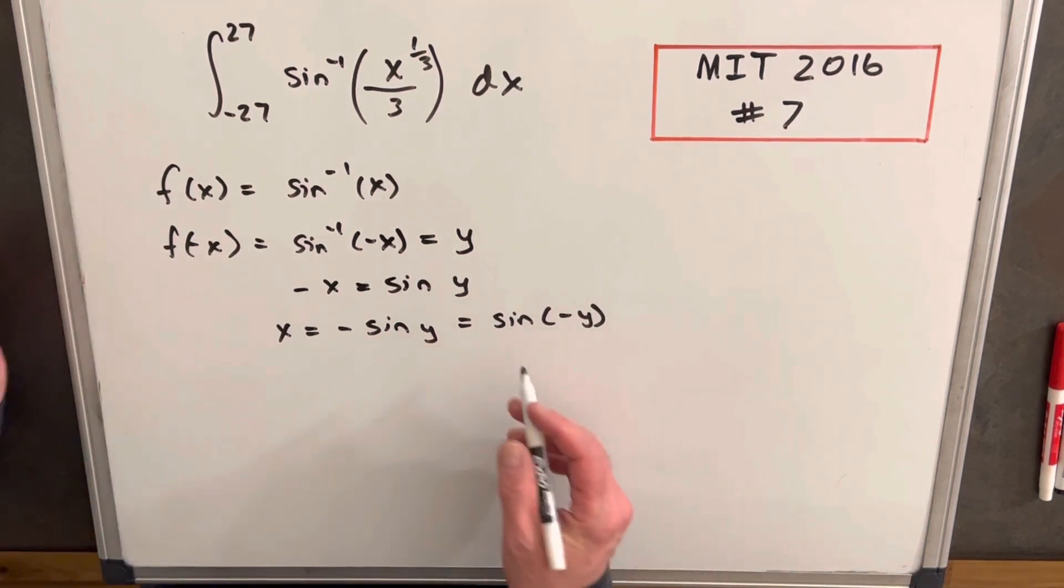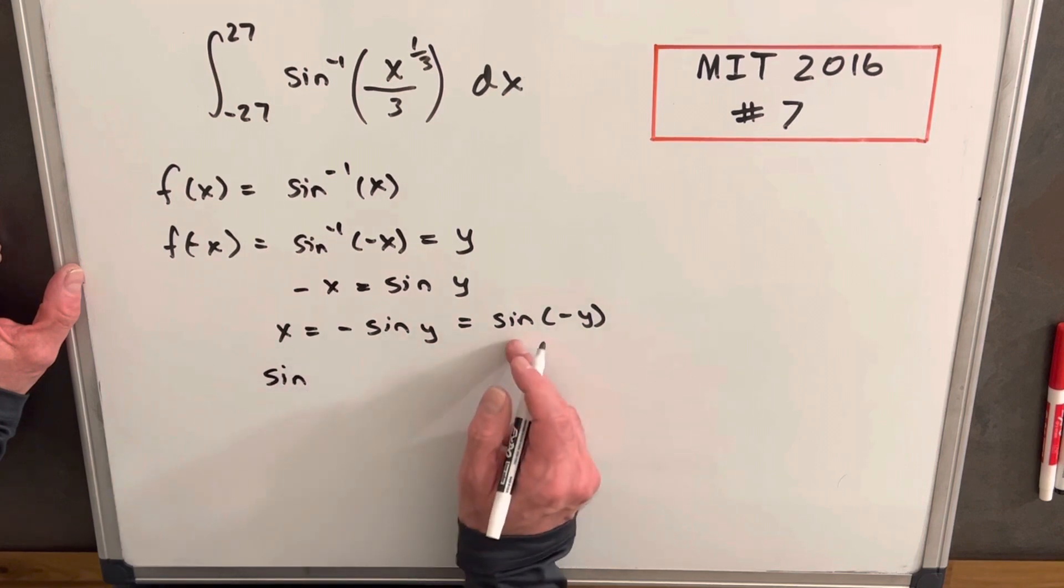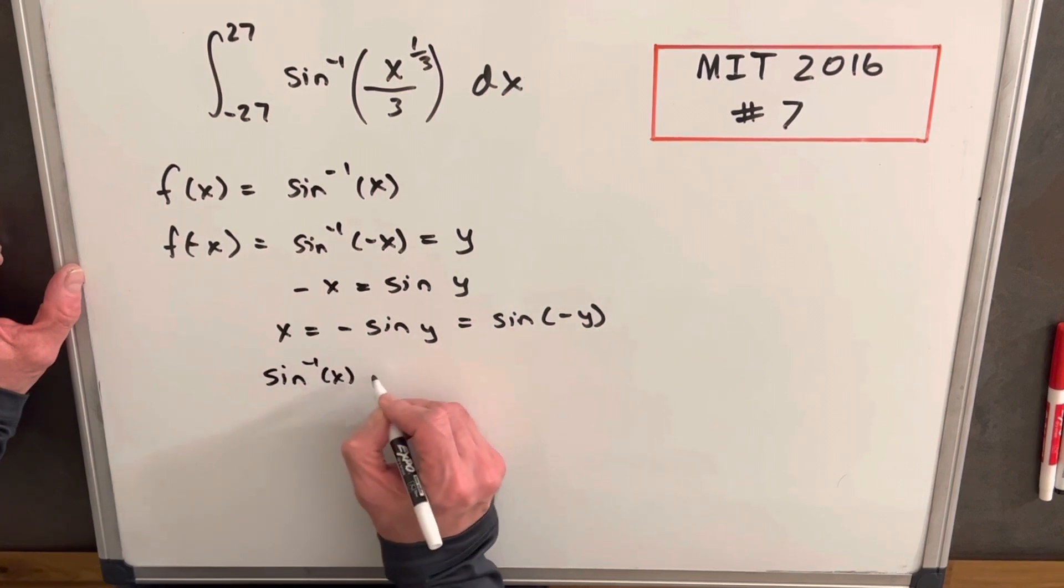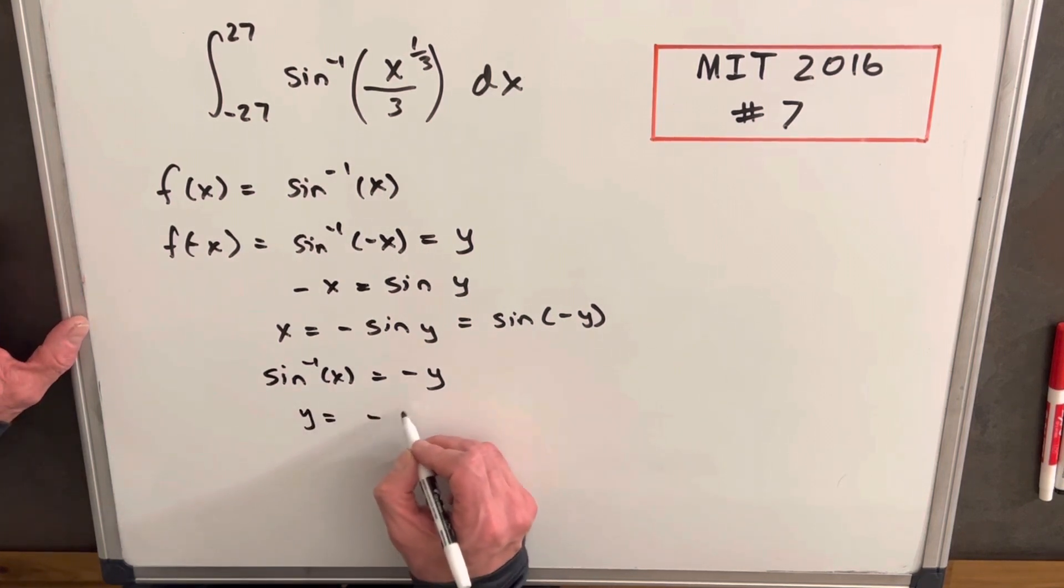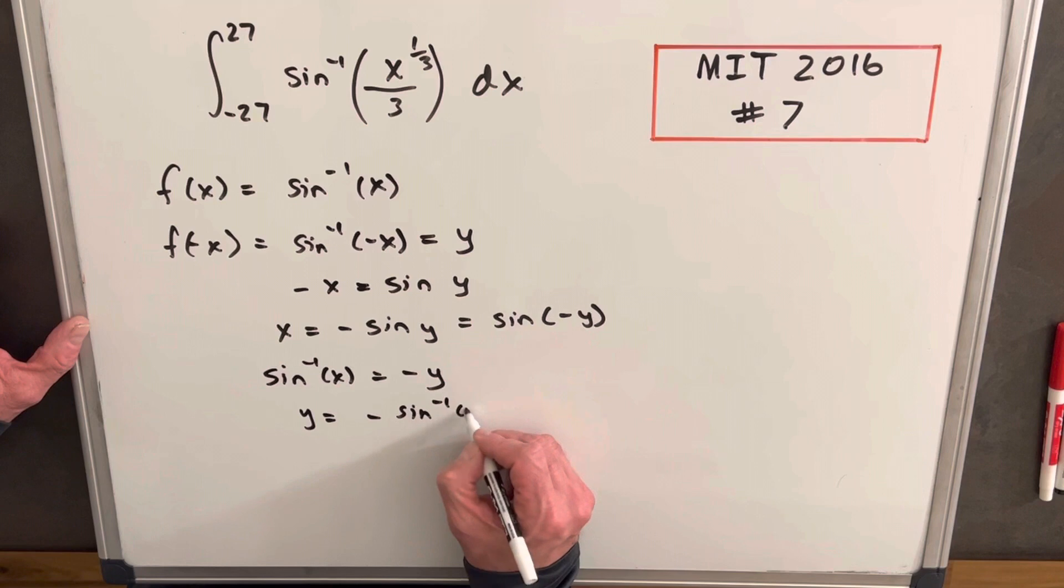But knowing that sine is an odd function, we can bring it inside the function and write it as sine of minus y. But then we can use the property of the inverse again and put it back like this and say sine inverse of x equals minus y.